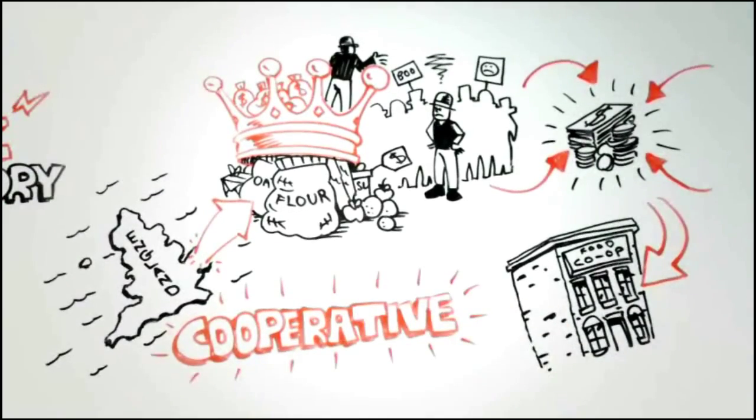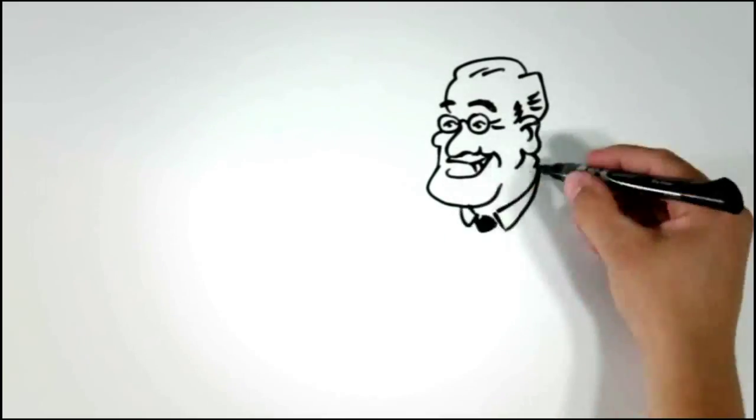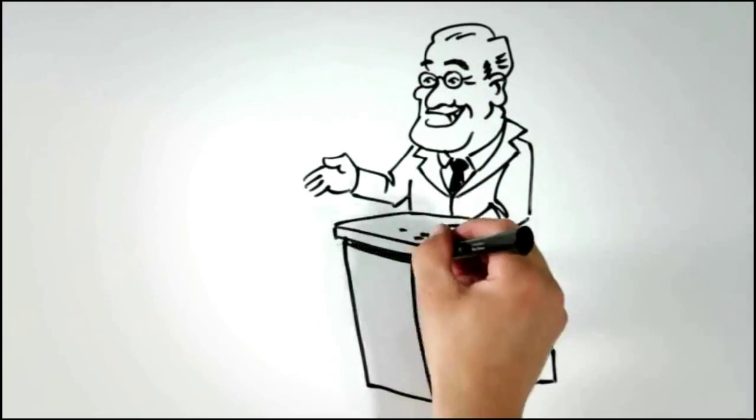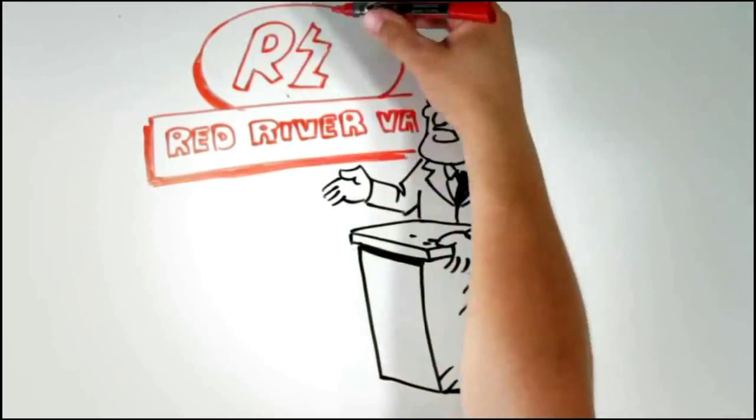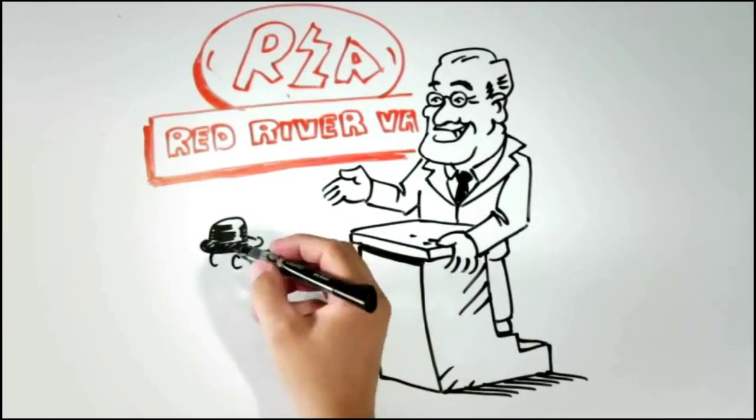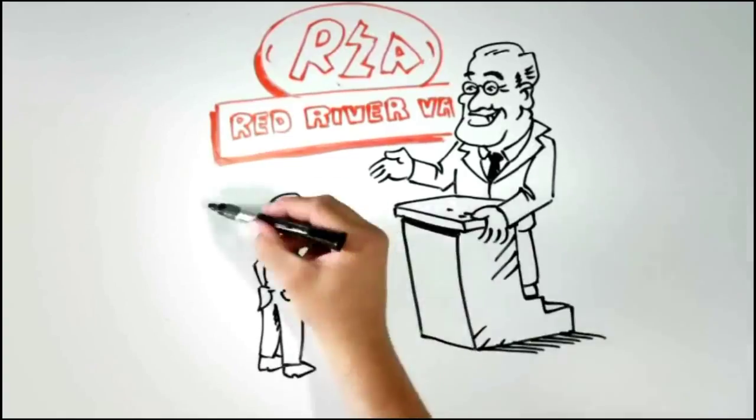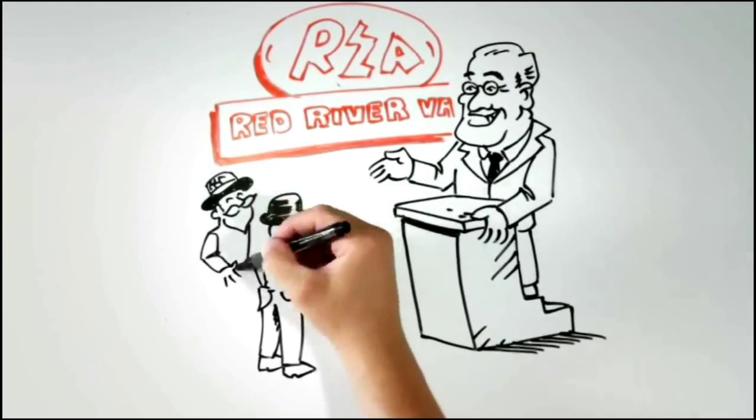The idea caught on here in the US. President Roosevelt gave electric cooperatives a jump start with the founding of the Rural Electrification Administration, the REA, telling American farmers and ranchers if you want electricity, you can do it yourselves.